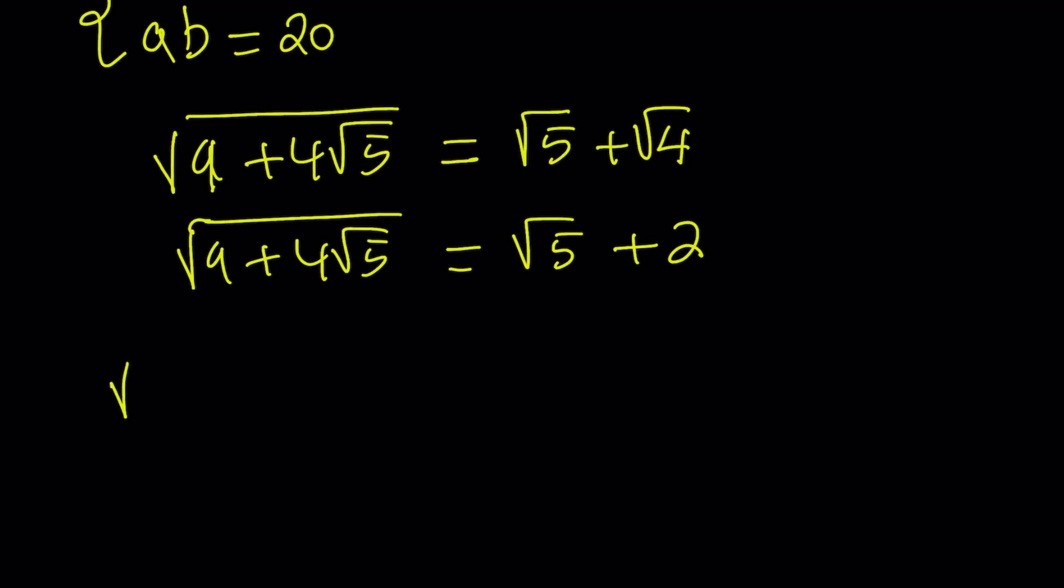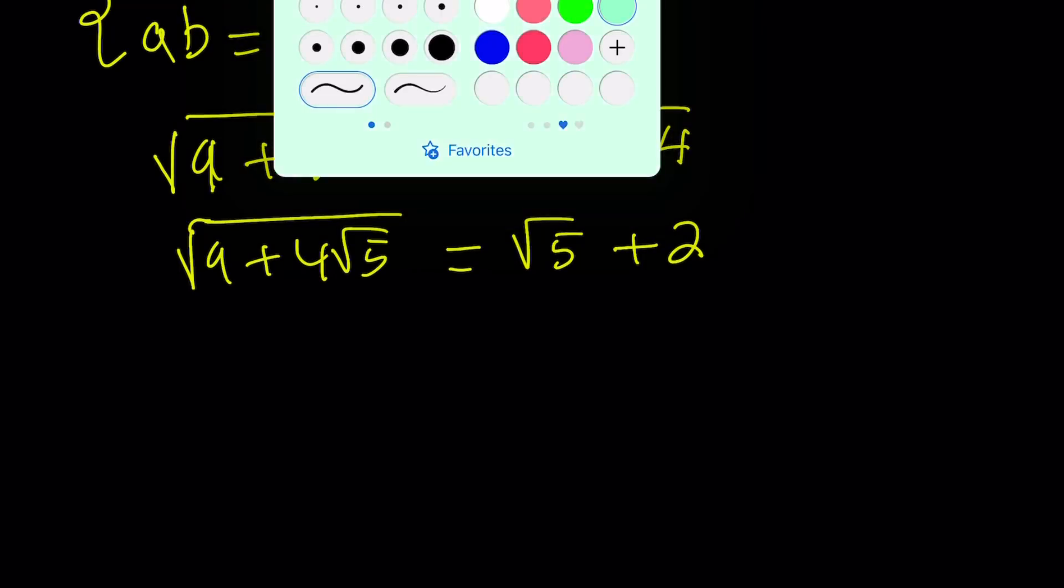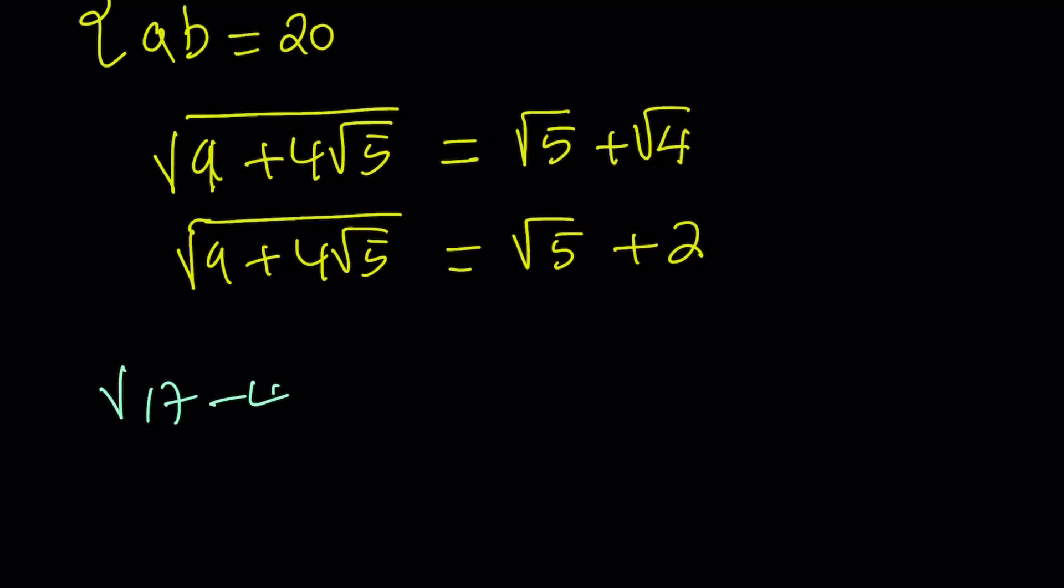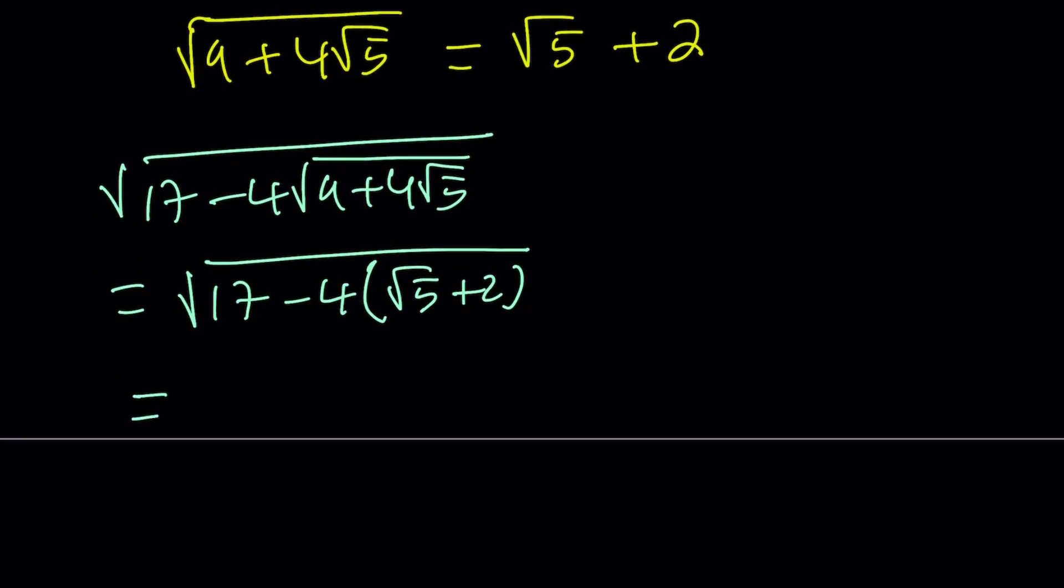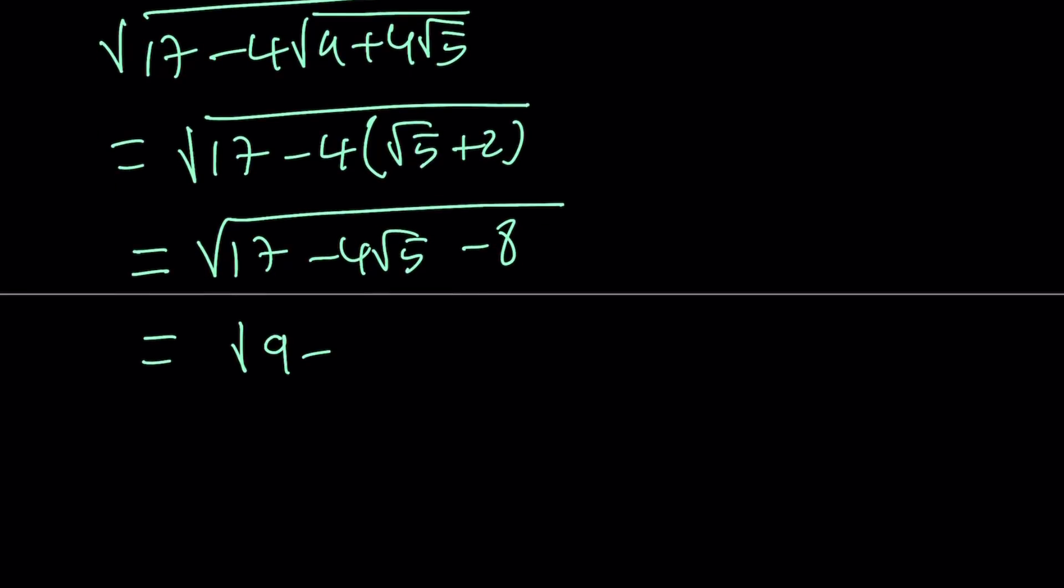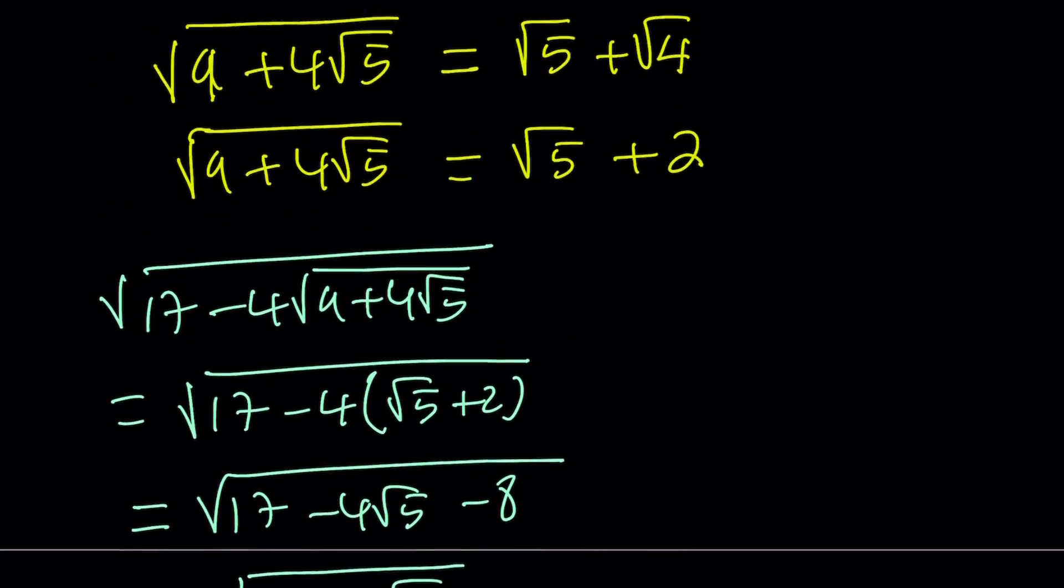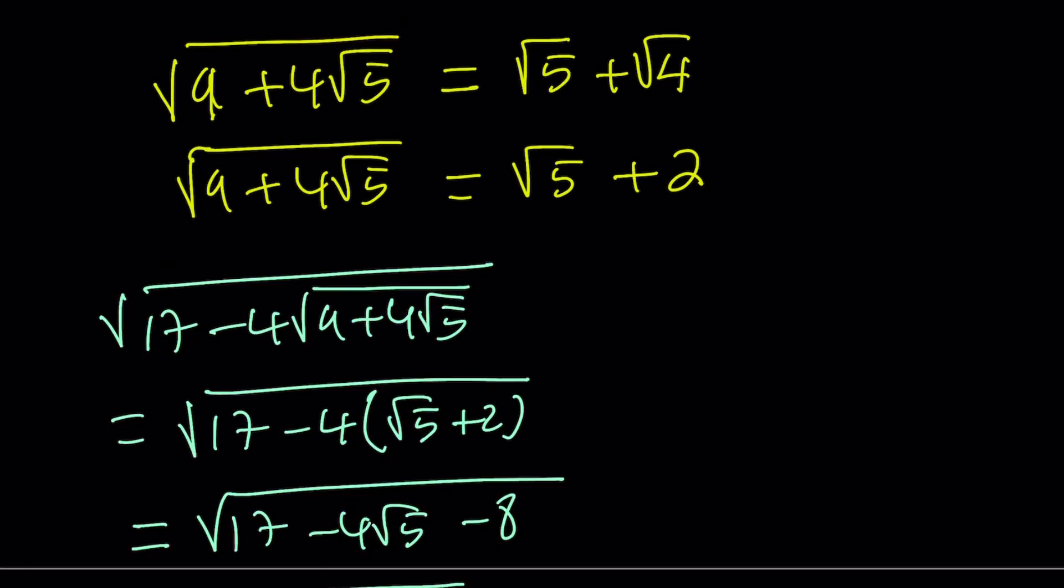In our expression, remember, we had 17 minus something. If you go ahead and use that, square root of 17 minus 4 times the square root of 9 plus 4 root 5. Now, I know what this expression is, so I can just replace it with root 5 plus 2. And that gives us something interesting. Let's go ahead and work it out. When I distribute, I'm going to get 17 minus 4 root 5 minus 8. 17 minus 8 is equal to 9. So, it's going to be square root of 9 minus 4 root 5.